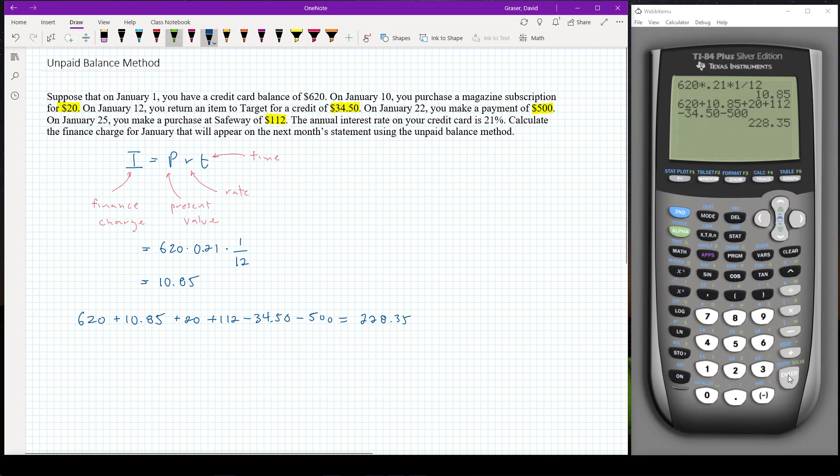So remember what these things are. We've got the finance charge. We've got the purchases. Those all added. We've got a return. And then what we made in our payment. So we add our starting balance of six twenty. And so now the two twenty eight thirty five is our ending balance.